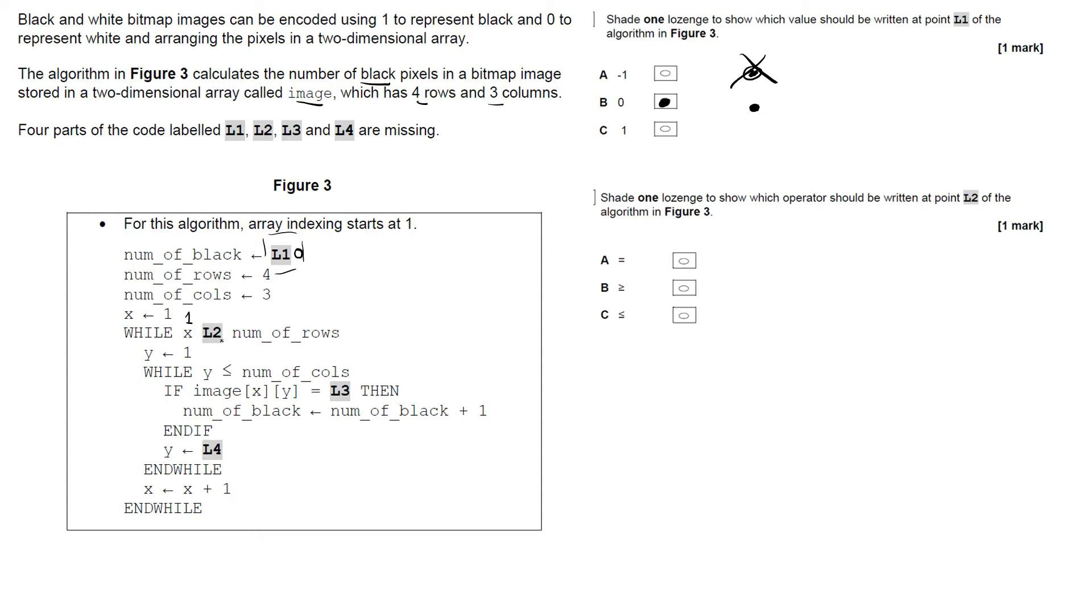So number_of_rows is set to four, so that's four. Now we want this while loop to run until it's got to the end of the row. So it starts at one and it stops at four.